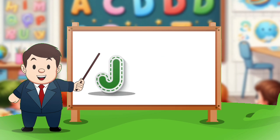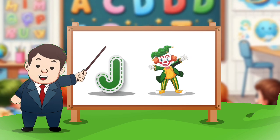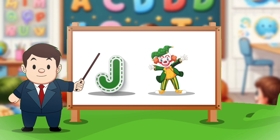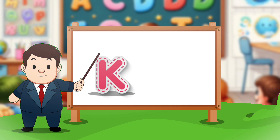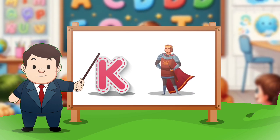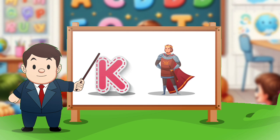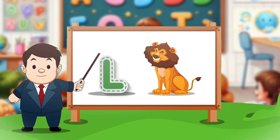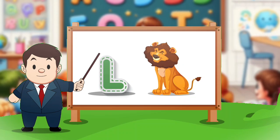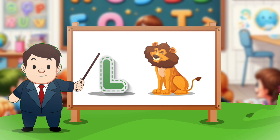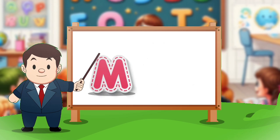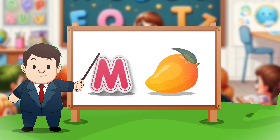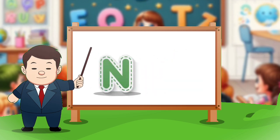J. J for joker. K. K for king. L. L for lion. M. M for mango.